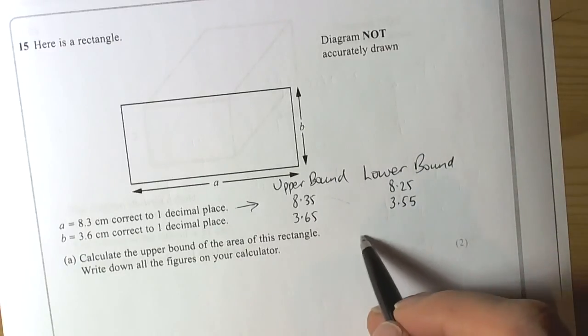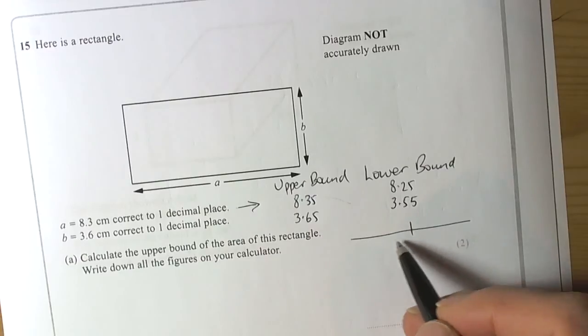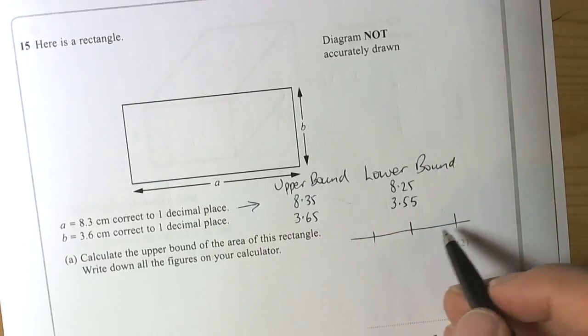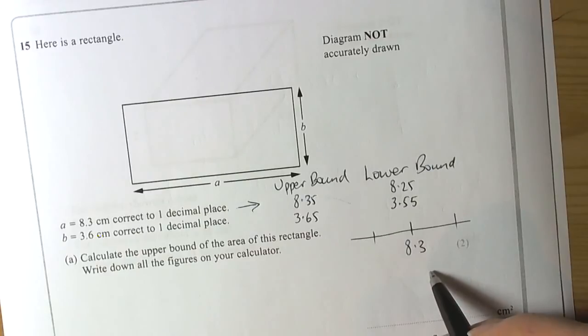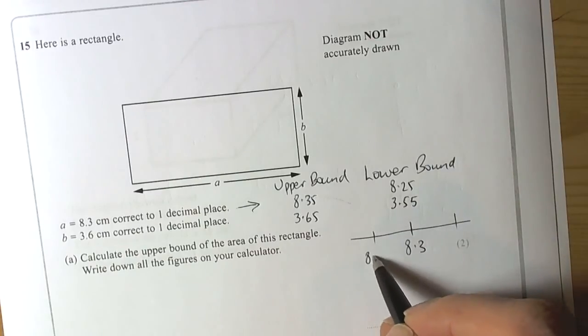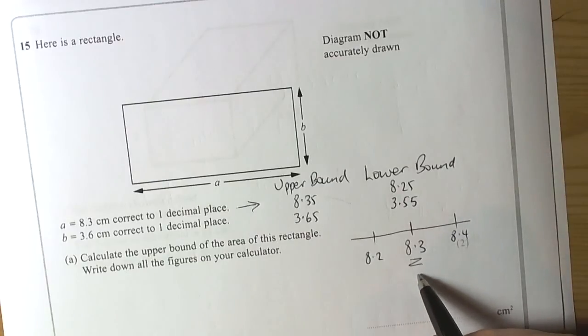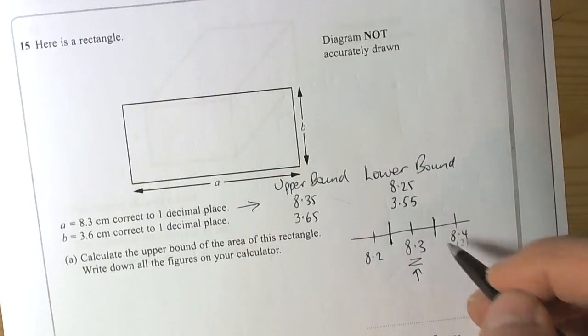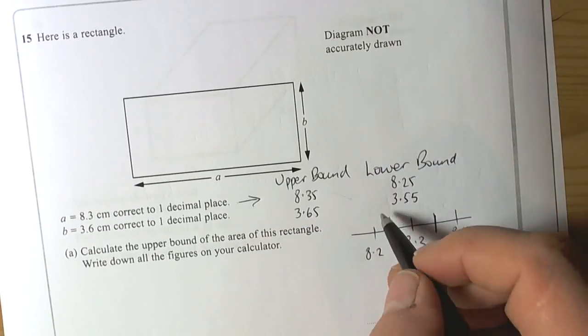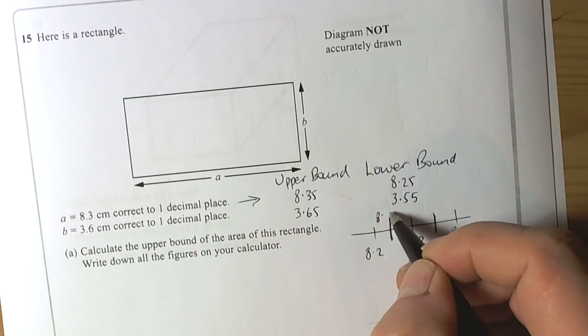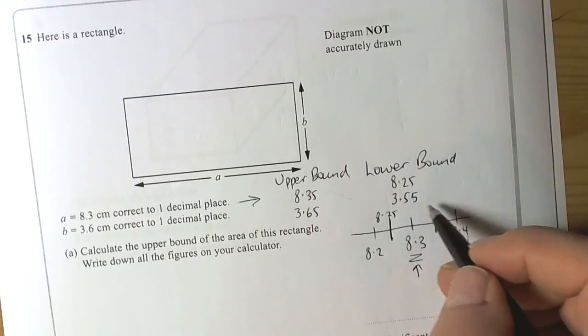Now, again, just to remind you that the way these bounds work is that they gave you an accuracy. So say for A it was 8.3, but it could have been 8.2 or it could have been 8.4, but they didn't. They gave the accuracy as this one, 8.3. So the boundaries have to be the halfway points. That's why we ended up with a boundary of 8.25 for the lower bound and 8.35 for the upper bound.